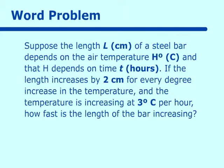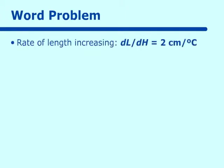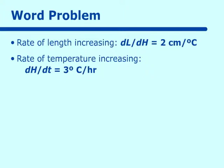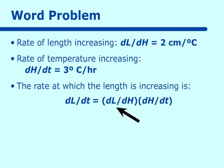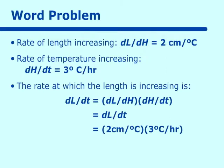We have two things happening here. The length increases by two centimeters per degree, and the temperature is increasing at three degrees centigrade per hour. So the rate of increase in length is two, and the rate of increase in temperature is three. The total rate of change is dL/dt, which equals dL/dh times dh/dt. Multiplying 2 times 3 gives 6 — the rate of increase for the length. That is how we use our composite function.